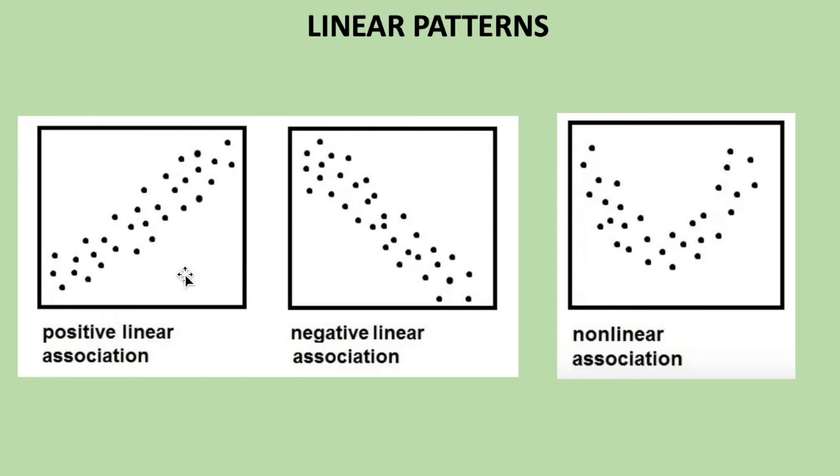Those graphs have linear associations. However, this graph still has some sort of trend happening. There's not no correlation going on. But it's definitely not a straight line. So it's not a linear association. This type of pattern would just be described as non-linear association.